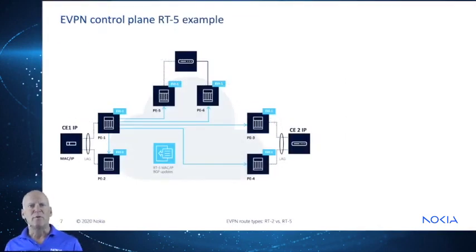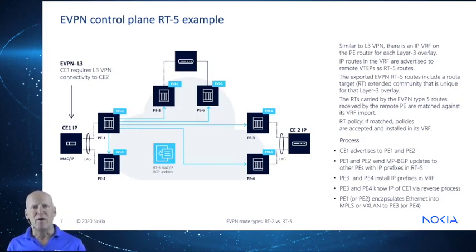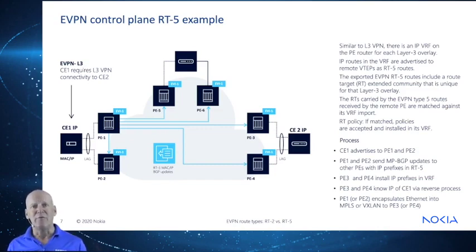Similar to L3 VPN, there is an IP VRF on each PE router for the Layer 3 overlay. IP routes in the VRF are advertised to remote VTAPs as RT5 routes. The exported EVPN RT5 routes include a route target extended community unique for that Layer 3 overlay. The RTs carried by the EVPN Type 5 routes received by the remote PE are matched against its VRF import route target policy. If matched, they are accepted and installed into that VRF, just like it works in Layer 3 VPN.